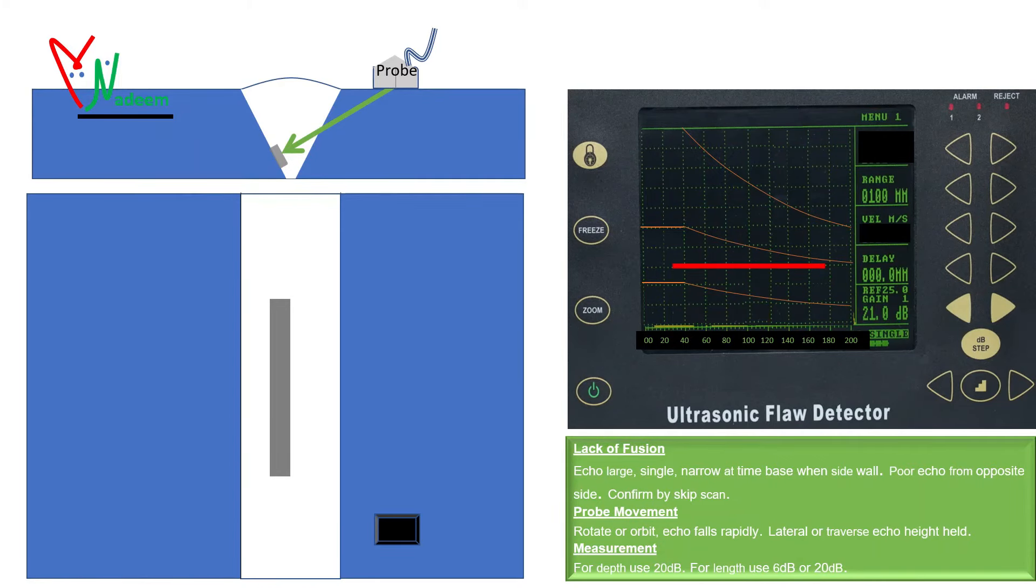For lack of sidewall fusion the best response is received by lateral movement to interpret the echo response. Mark the position where the best response is being received. As we move the probe toward the defect the amplitude will start rising. At the start of the defect you can see the amplitude is approximately 50 percent or 6 dB of the full signal response height. As we keep moving the probe the max signal response will be received. Based on this best response all evaluation and sizing will be done.